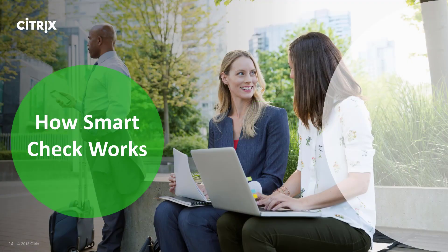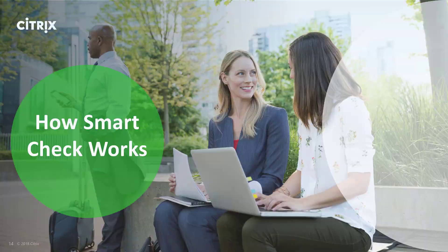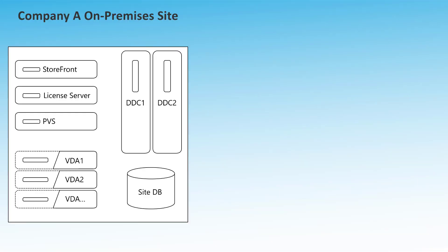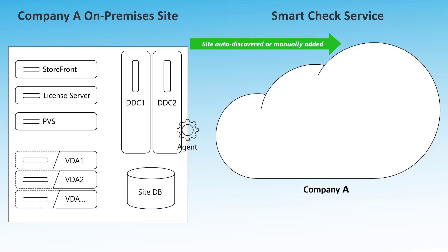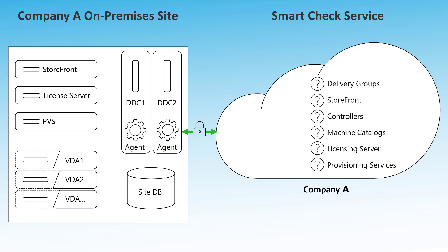To see just how simple SmartCheck is, let's see how it works. On the left, we have Company A's on-premises site with all of the ZenApp and ZenDesktop core infrastructure. And on the right, we have the SmartCheck cloud service. To get started, you add your site to SmartCheck by downloading a lightweight agent and installing it on your delivery controllers. The agent establishes a secure communication channel with the SmartCheck service and is ready to begin executing checks.